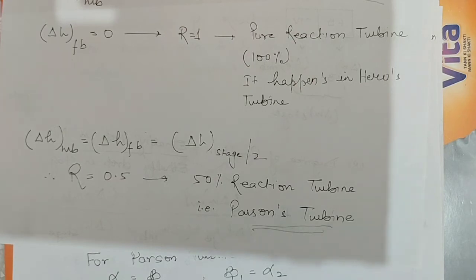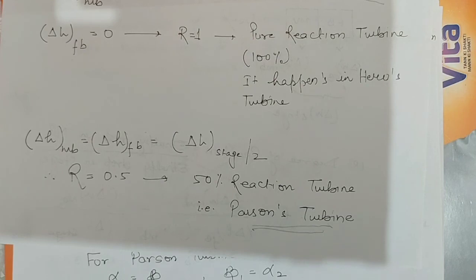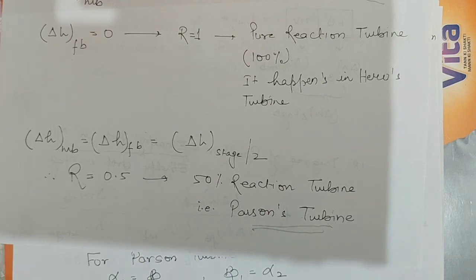This is all about the degree of reaction in the case of reaction turbines. In the next lecture, we will discuss the velocity diagram, blade efficiency, and the maximum condition for blade efficiency in the case of the reaction turbine having 50% degree of reaction, that is, the Parsons turbine. Thank you so much.